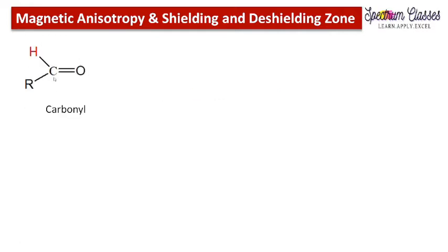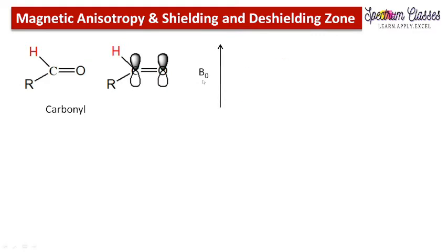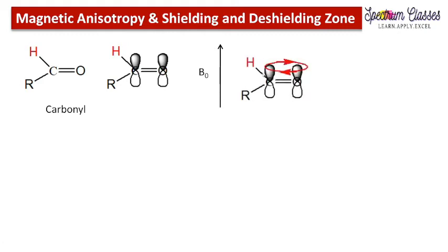Here is the molecule having a carbonyl group. I have drawn the orbital structure of the carbonyl group. When we place this molecule in the applied external magnetic field B0, this B0 field induces the circulation of electrons within the pi orbitals of the carbonyl group, and this circulation of electrons is perpendicular to the applied external magnetic field. The arrow shows the direction of the induced current — if the flow of electrons is in one direction, then the direction of the induced current is opposite to that.